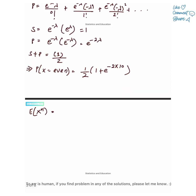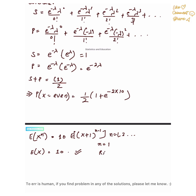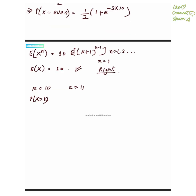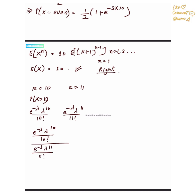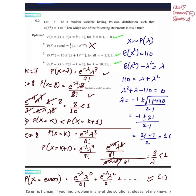We have gotten our answer, but to justify we look at the other options as well. The third option — E[X^n] equals 10 times E[(X+1)^(n-1)] — is also correct. Looking at option 4, we find P(X=k) for k equals 10 and 11; upon finding the ratio, we see that 11 upon lambda is greater than 1, hence the fourth option is also correct.